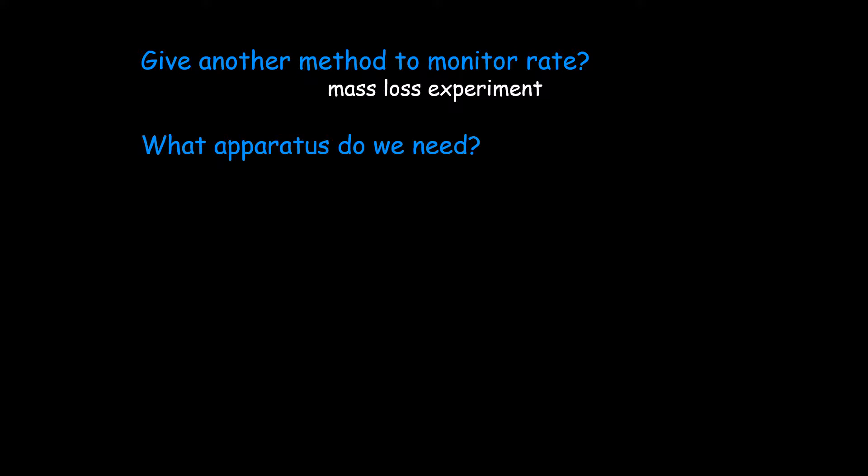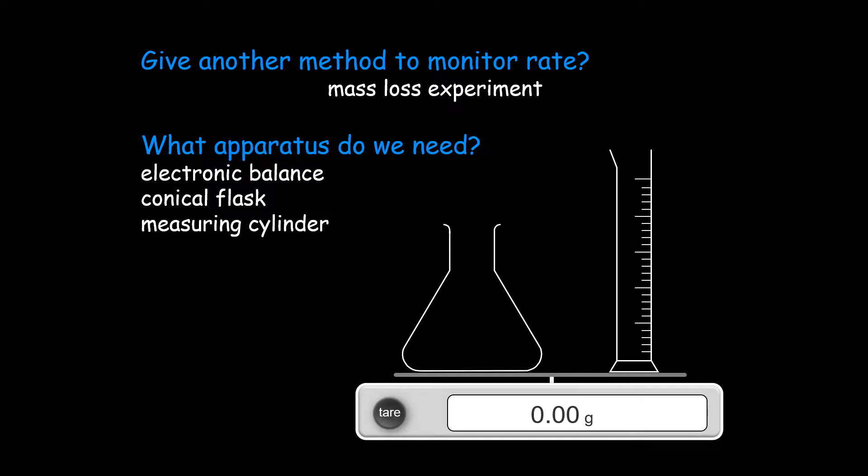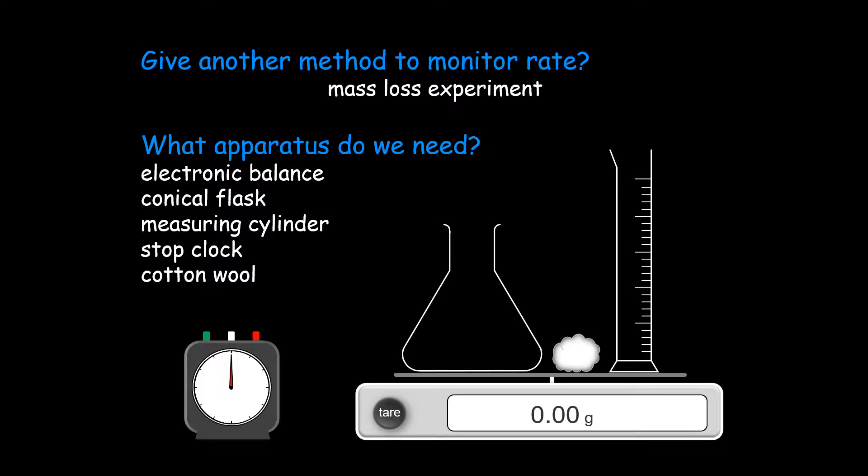The mass loss experiment. We need an electronic balance, a conical flask, a measuring cylinder, a stop clock, and some cotton wool.